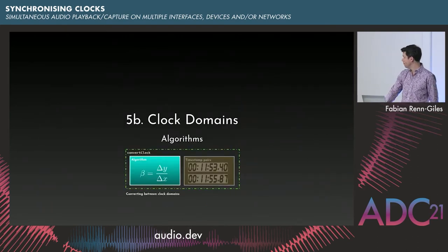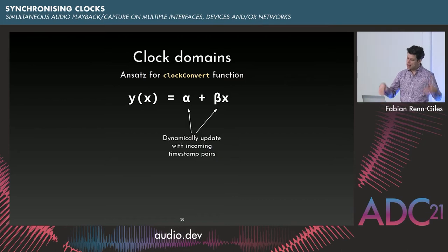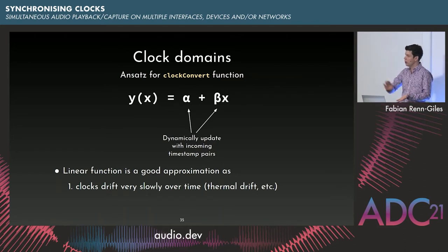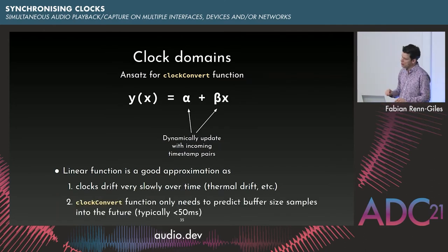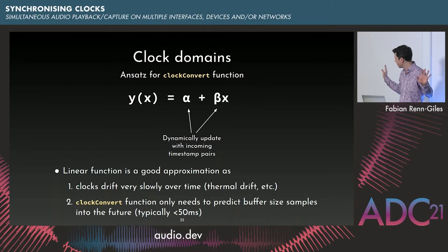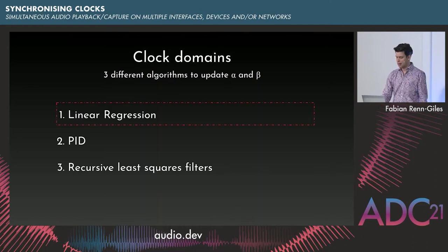As an ansatz, we use a linear function alpha + beta*x, where alpha and beta update each time a new timestamp pair comes in. That might seem a crude approximation, but it isn't — the drift between audio interfaces is super slow: thermal drift, electrostatic noise, crystal aging. And in the basic algorithm we're only converting timestamps one buffer into the future, so a linear ansatz is perfectly suitable. The question is how to update alpha and beta — three algorithms: linear regression, PID, and recursive least squares filters.